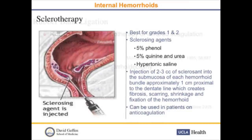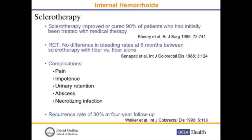Sclerotherapy is best for grades one and two. A variety of sclerosing agents can be used. We inject about two to three cc's into the submucosa of each hemorrhoidal bundle, approximately one centimeter proximal to the dentate line, creating fibrosis, scarring, shrinkage, and fixation of the hemorrhoid. It can be used in patients on anticoagulation. Sclerotherapy improved or cured 90% of patients initially treated with medical therapy in one study, although a randomized controlled trial showed no difference in bleeding rates at six months between sclerotherapy with fiber versus fiber alone. Recurrence rates are usually a little higher than rubber band ligation.